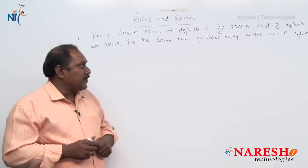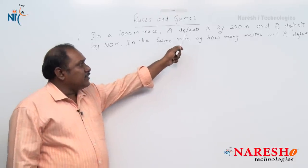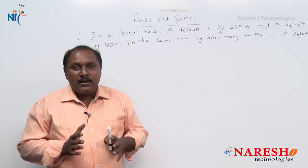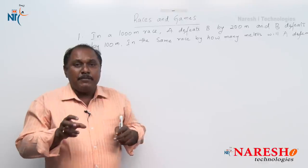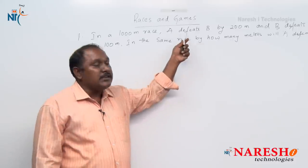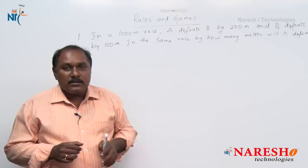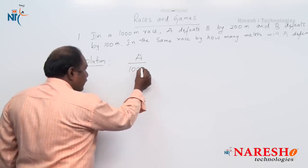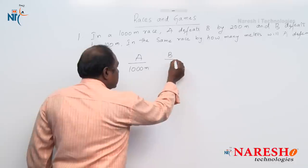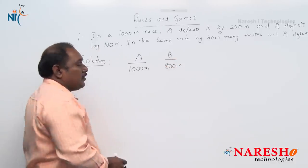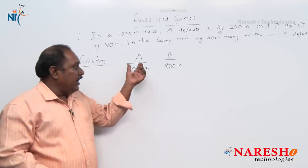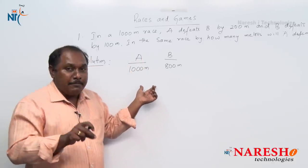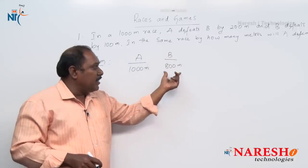Let us analyze the question. In a 1000 meter race, A defeats B by 200 meters. When I say A defeats B, it means A completed his race. A defeats B by 200 meters means that if A runs 1000 meters, in the same time B runs 800 meters.